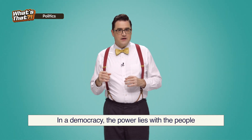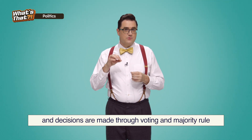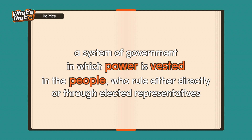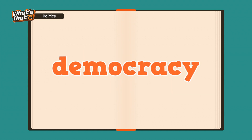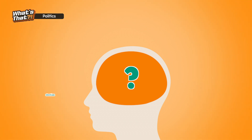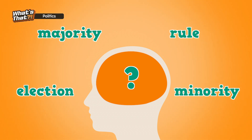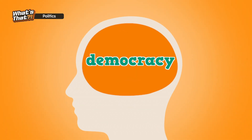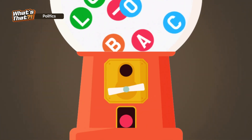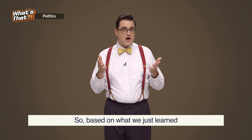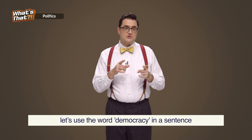In a democracy, the power lies with the people, and decisions are made through voting and majority rule. What's that? A system of government in which power is vested in the people, who rule either directly or through elected representatives — democracy. Related words: election, majority, rule, minority. Based on what we just learned, let's use the word democracy in a sentence.